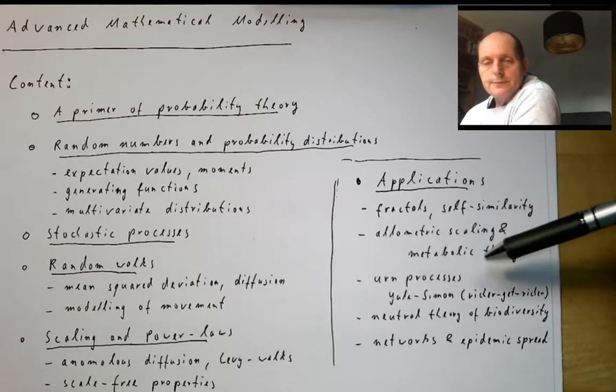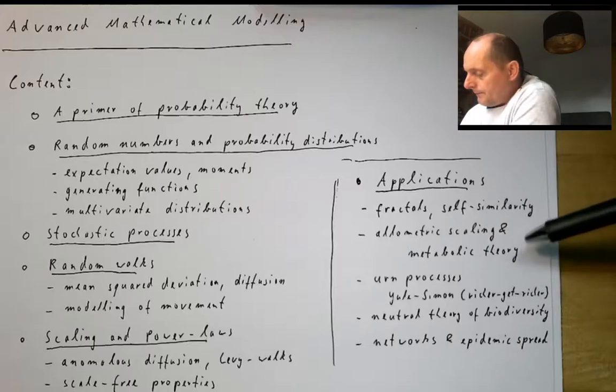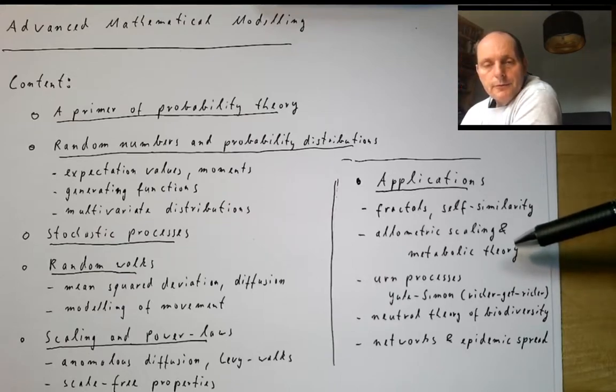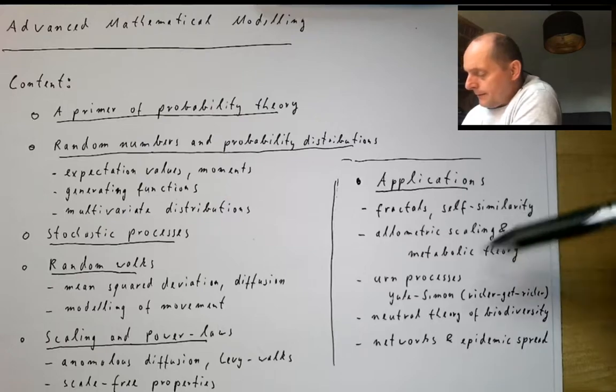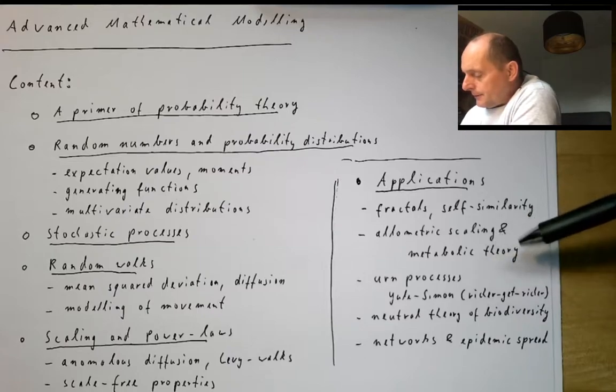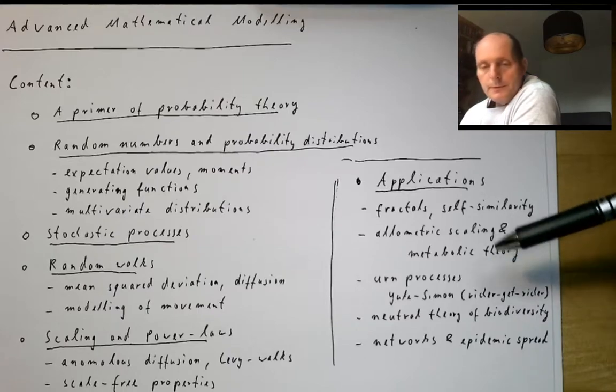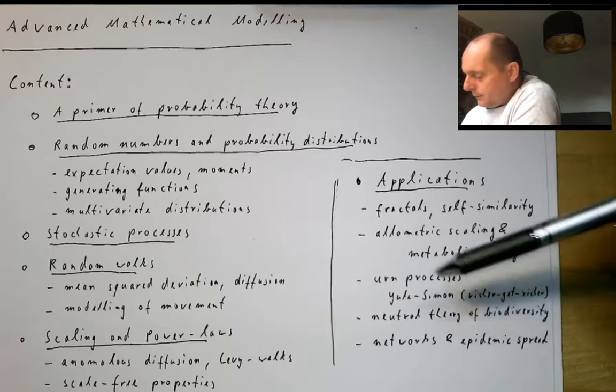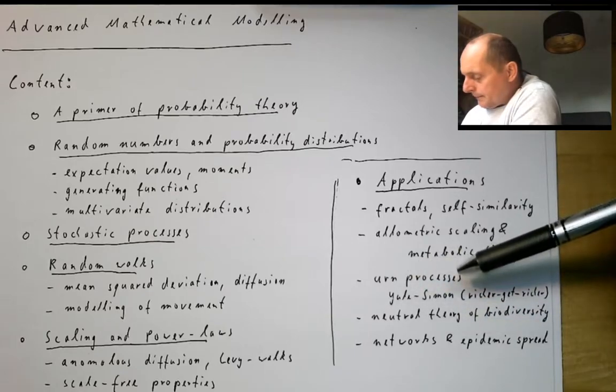Probably we want to look at allometric scaling and metabolic theory. In ecology, the metabolic theory is one of the prevailing theories which comes up again and again, but many people don't really know where it comes from or how this is modeled. With the tools we have, we will be able to understand what's behind the metabolic theory.